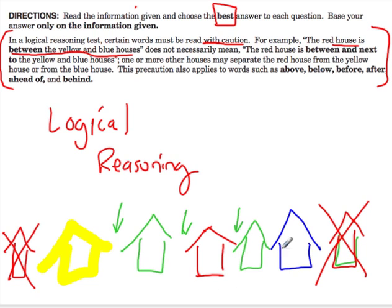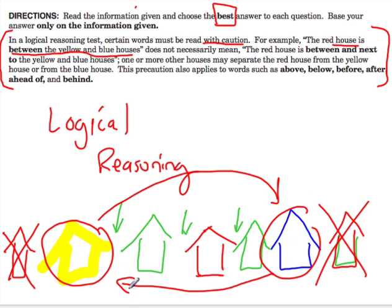Also, my diagram is still not 100% accurate because we could have the yellow house over here and the blue house on this side. We don't know. We just know the red house is between them. Also, and they say it right here, one or more houses may separate the red house from the yellow house.